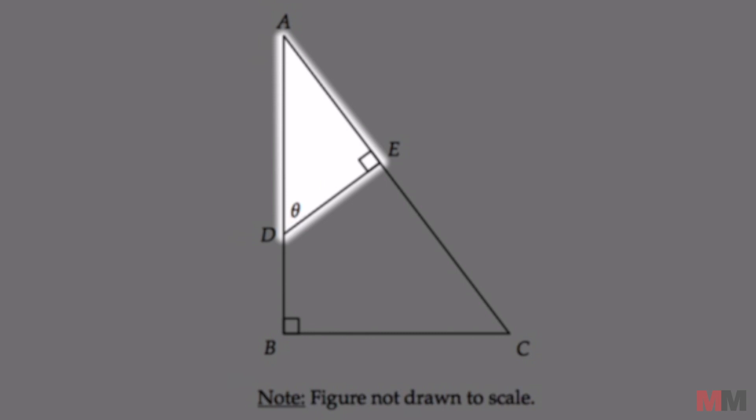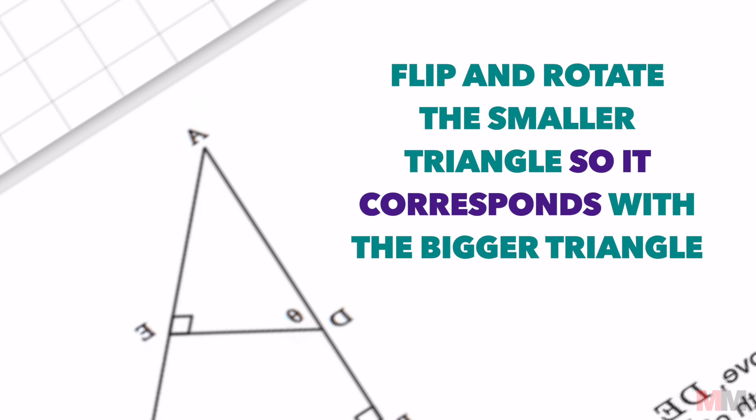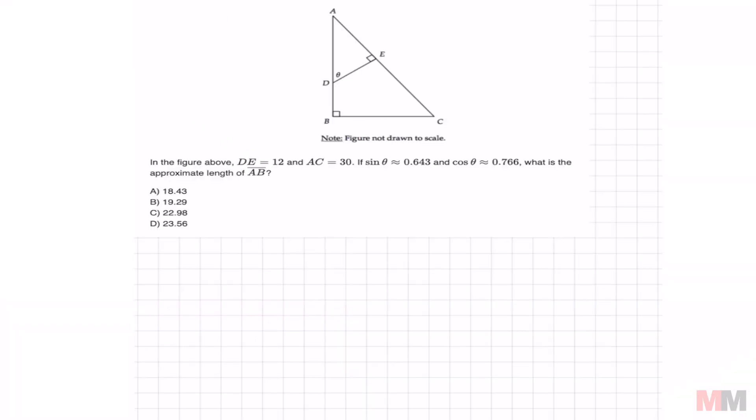Notice that there are two triangles in this picture and you want to flip and rotate the mini triangle around. That way it's going to be easier to set up the proportions later. Let me redraw those two triangles for you and we get something like this.